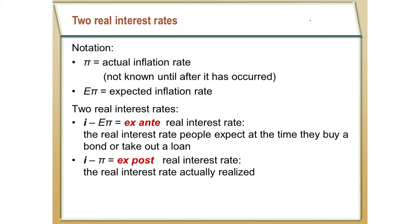But that doesn't help decision makers make decisions about the current moment or the future. When individuals and firms are making decisions, they actually base their decisions on something called the expected inflation rate — what we think inflation will be in the future. So that leads us to two different definitions of the real interest rate. The ex-ante real interest rate is the interest rate that people expect at the time they engage in some economic activity, whether it's taking out a loan, investing in a project, investing in the stock or bond market, et cetera.